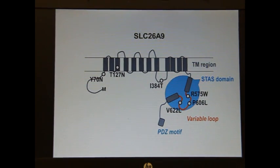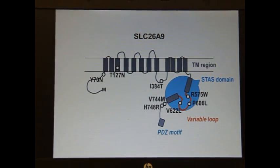R575W, P606L, V622L, are located in the STAS-domain variable loop. The V744M, H748R SNPs are located belonging to the STAS-domain.